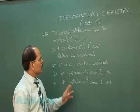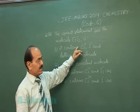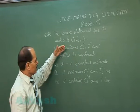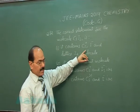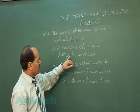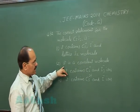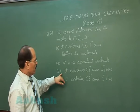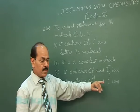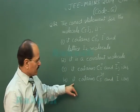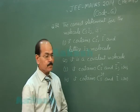Question number 82 says the correct statement for the molecule CSI3 is. Four options are given. Option one says it contains Cs+ I- and lattice I2 molecule. Option two says it is a covalent molecule. Option three says it contains Cs+ and I3- ions. Option four says it contains Cs3+ and I- ions.